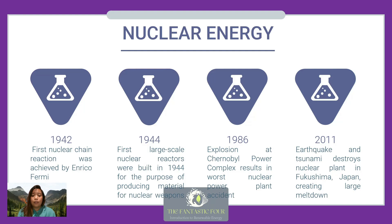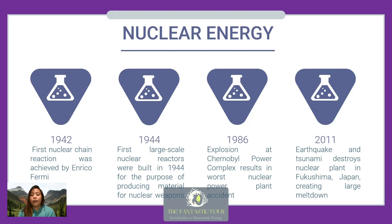In the nuclear energy timeline: in 1942, the first nuclear chain reaction was achieved by Enrico Fermi; in 1944, the first large-scale nuclear reactors were built to produce material for nuclear weapons; in 1986, the Chernobyl power complex explosion resulted in the worst nuclear power plant accident; and in 2011, an earthquake and tsunami destroyed the nuclear power plant in Fukushima, Japan, creating a large meltdown.